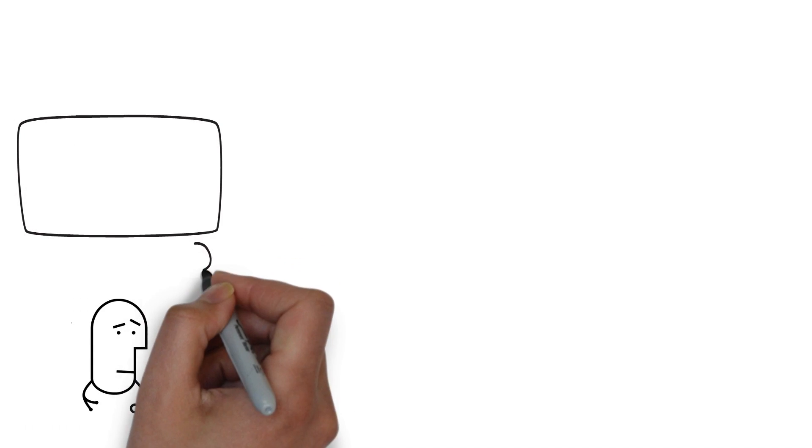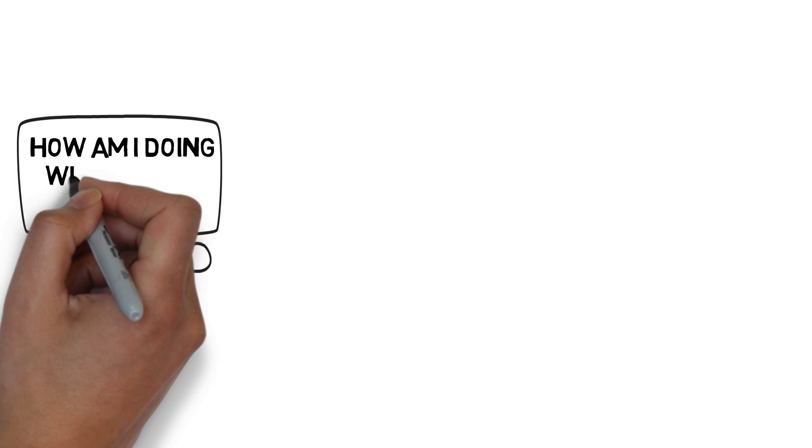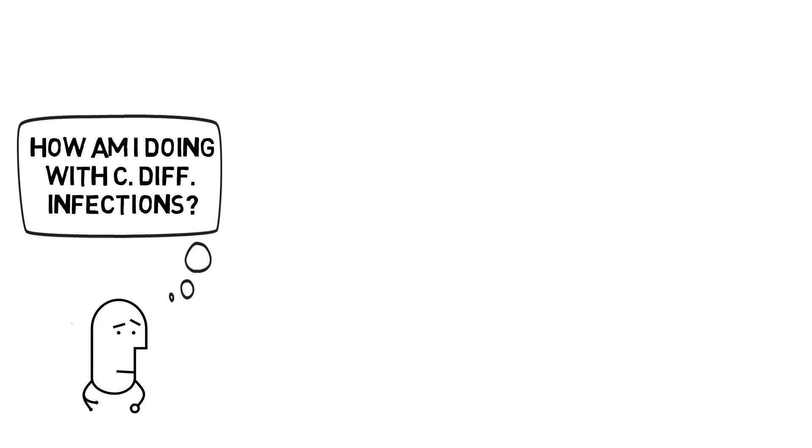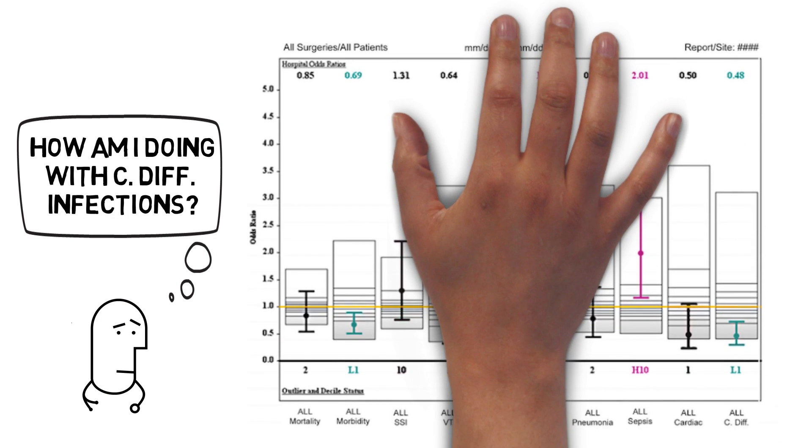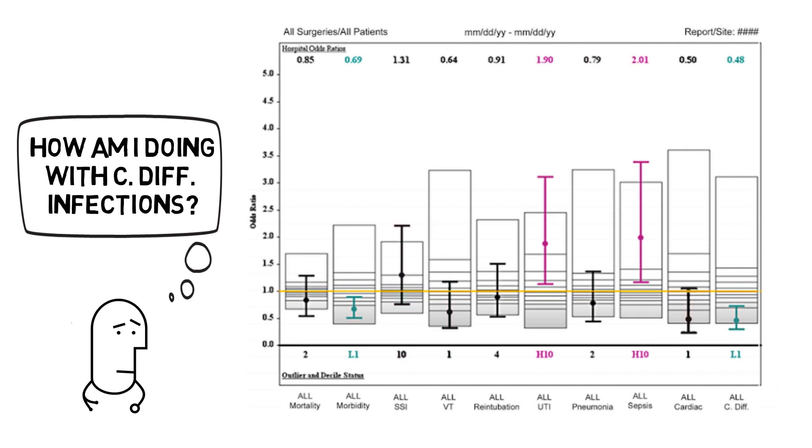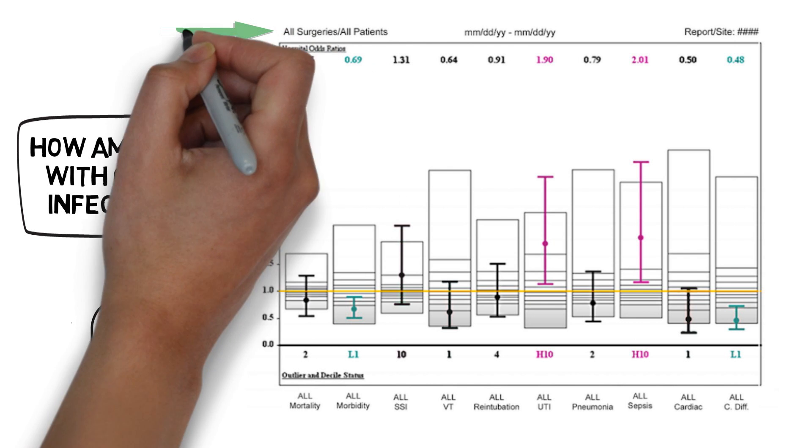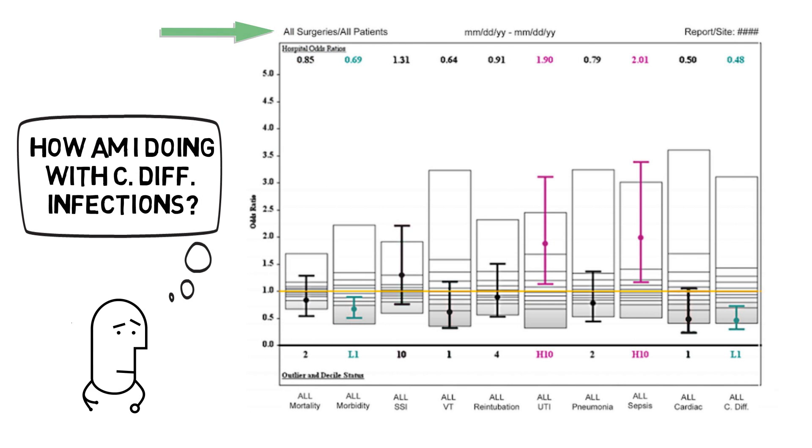Let's now go through a quick example. Let's imagine you were wondering how your patients were faring with C. diff infections. Well, we're first going to have to grab our trusty surgical safety data report. Next, we want to have a look at the top to make sure that, in fact, the identifiers for this chart pertain to us, the date range we're interested in, and our site.